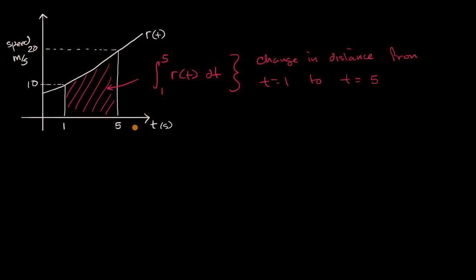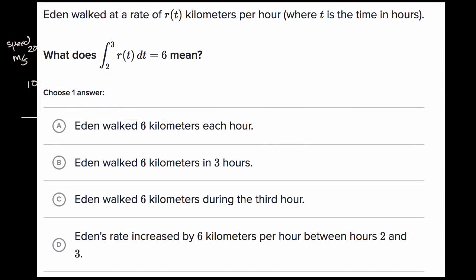Now with that context, let's actually try to do an example problem, the type that you might see on Khan Academy. This tells us, Eden walked at a rate of r(t) kilometers per hour, where t is the time in hours. So now t is in hours.